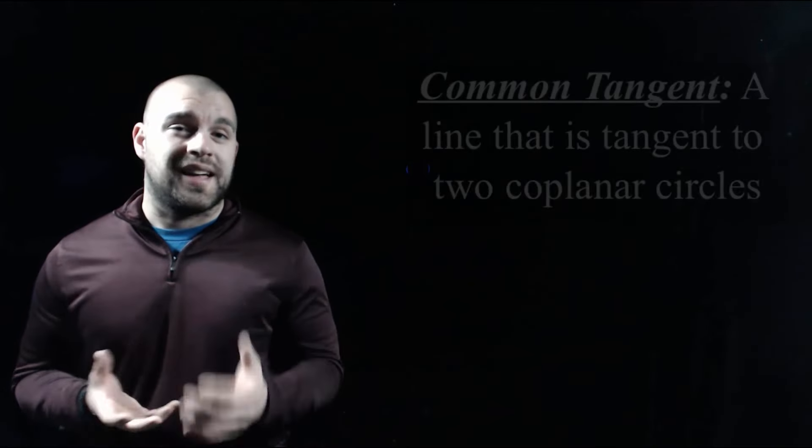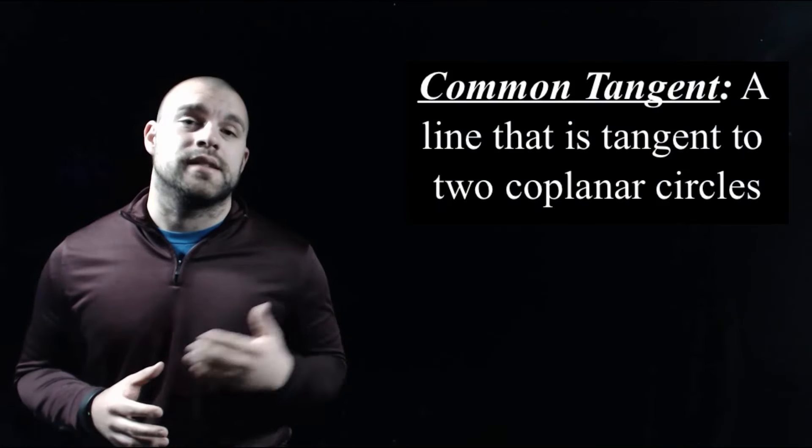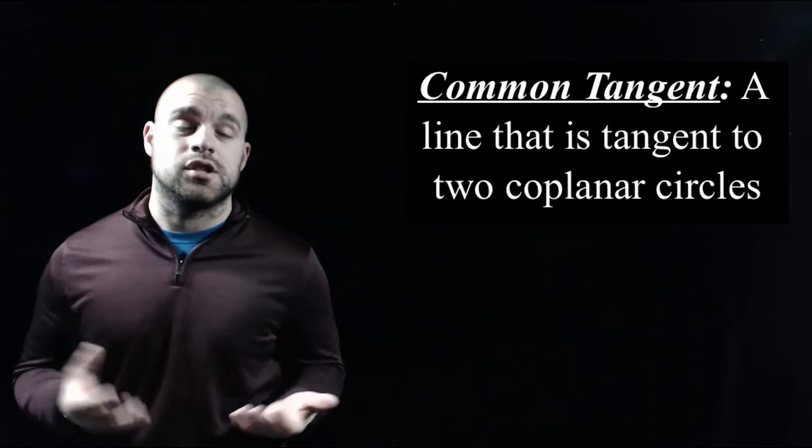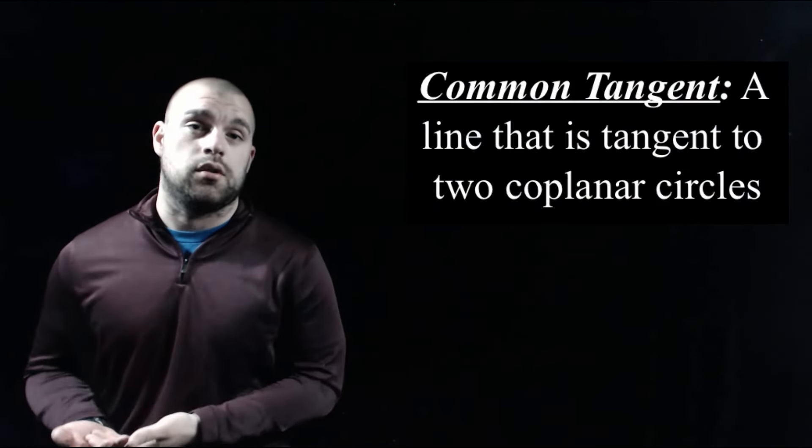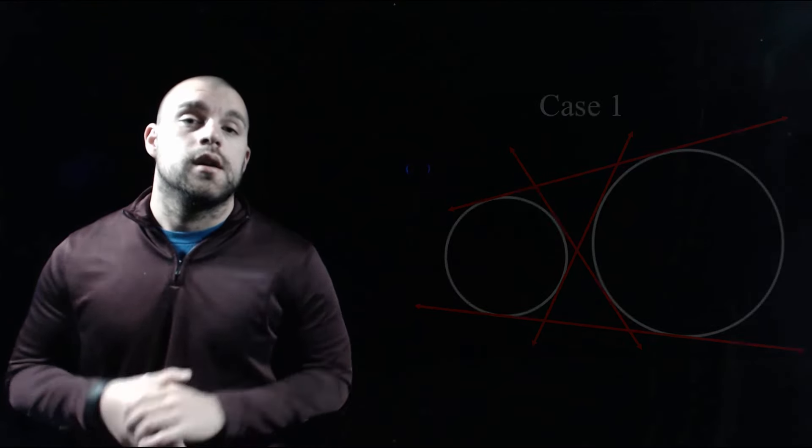The last thing I want to talk about in this video are common tangents. Earlier we talked about what a tangent line is — a line that just barely touches a circle at one point. A common tangent is a line that's tangent to two circles, and there are a few different cases that we'll talk about with common tangents.